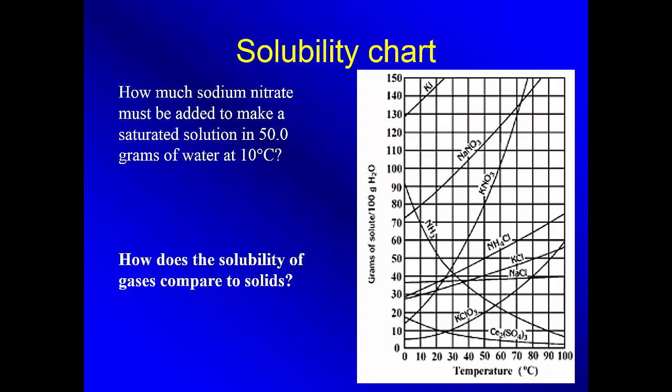How much sodium nitrate must be added to make a saturated solution in 50 grams of water at 10 degrees Celsius? So I'm finding sodium nitrate at 50 grams at 10 degrees. At 10 degrees, come up. Look at what we know. 80 grams dissolves in 100 grams of water. That's from the graph. But I only have 50 grams of water. So this was divided by 2. So you're going to have to divide by 2. So 80 divided by 2. So 40 grams will dissolve in my 50 grams of water.